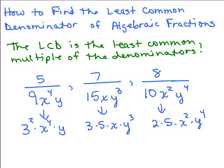This method for getting the least common multiple is to write everything in prime factor form, but if there's the same factor more than once, write it using exponents. Now we look at the different types of factors — 2 is a different factor than 3, and x is a different factor than y — and write them all down multiplied together. So there's a 2, a 3, an x, and a y.